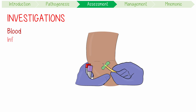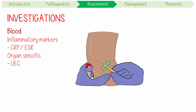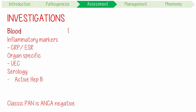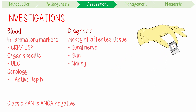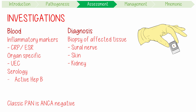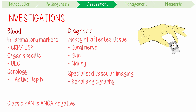When investigating PAN, blood tests should include inflammatory markers like CRP and ESR, organ-specific markers like UECs, and most importantly serology, because it's associated with active hepatitis B and sometimes hepatitis C infection. Classic PAN is ANCA negative. Diagnosis is based on biopsy of affected tissues — typically the sural nerve, skin, or kidney. If no tissue is available for biopsy, specialized vascular imaging like renal angiography can be used to find classic features like aneurysm.